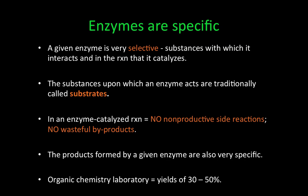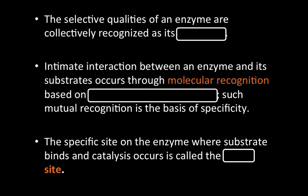In an enzyme-catalyzed reaction, because enzymes are so specific for the type of substrate they react with as well as the type of reaction they perform, there are no non-productive side reactions and no wasteful byproducts. This is significant — in organic chemistry labs, yields might be as low as 30–50%, which are considered acceptable. But with enzymes, because they are so specific, you always get the same product every time.